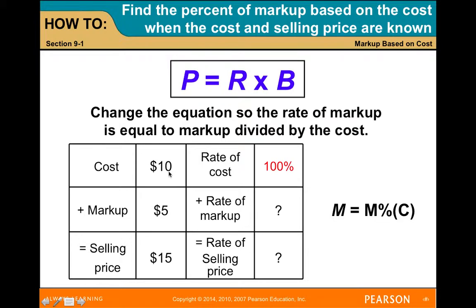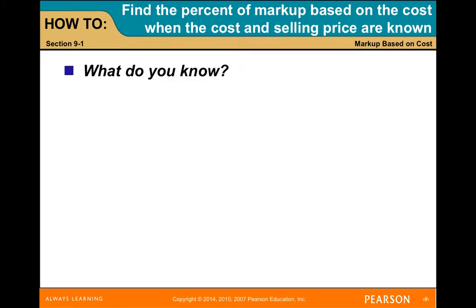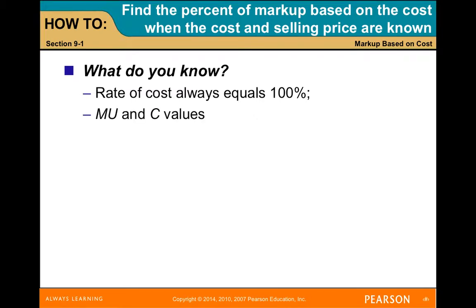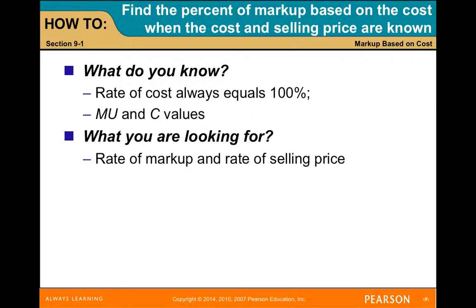Here we have cost $10 plus the markup equals selling price of $15. The rate of the cost is $10 for them, and since we have this information, we can calculate the rate of the markup and then the rate of the selling price. We have M equals the percent of M times C (cost). We know the rate of cost equals 100%, and we know the markup and cost values. We're looking for the rate of the markup and the rate of the selling price.